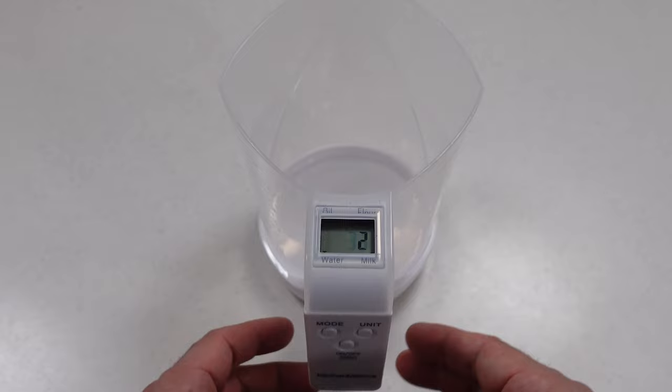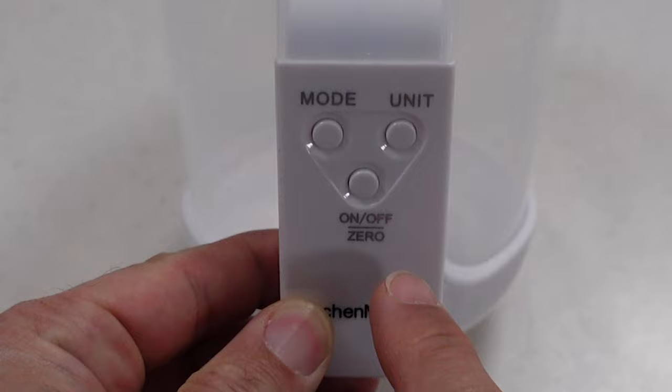Functions on this are really simple. You have your three buttons here on the front. This one turns the scale on and off, and pressing it while it's on zeroes out the scale.